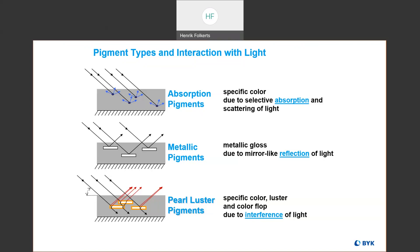Then we have pearl luster pigments, which cause the color flop — where the color hue of the coating changes depending on your observation angle. That's due to certain interference effects where different photons of light are mixing and interfering with each other to cause this color change effect as you go from angle to angle.